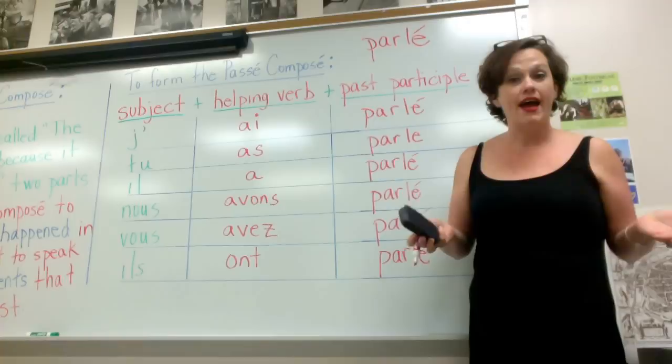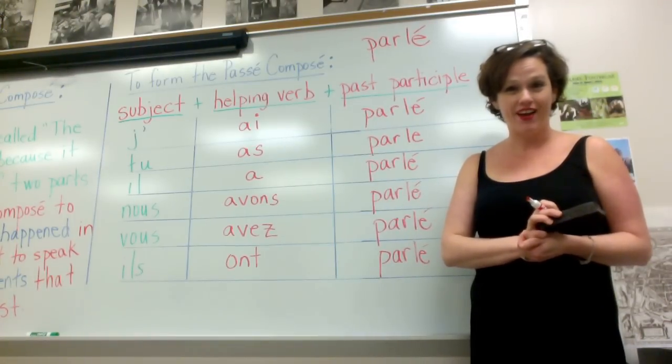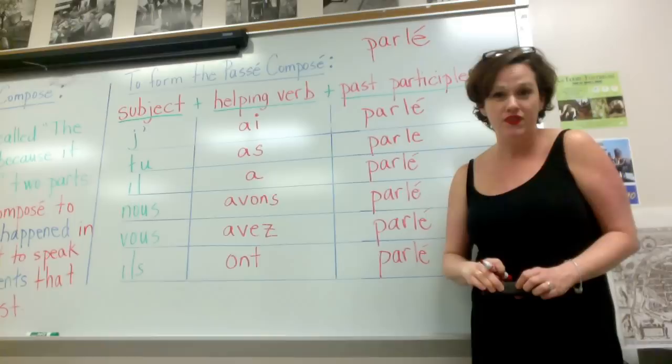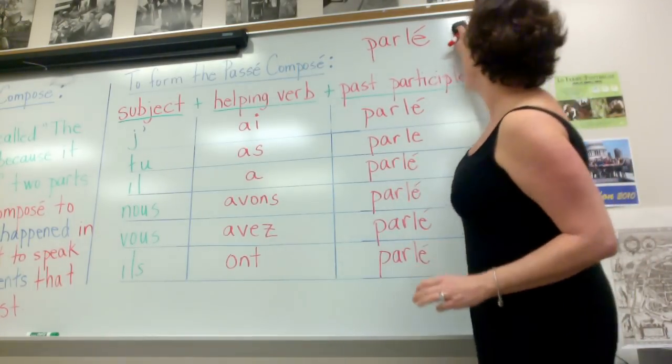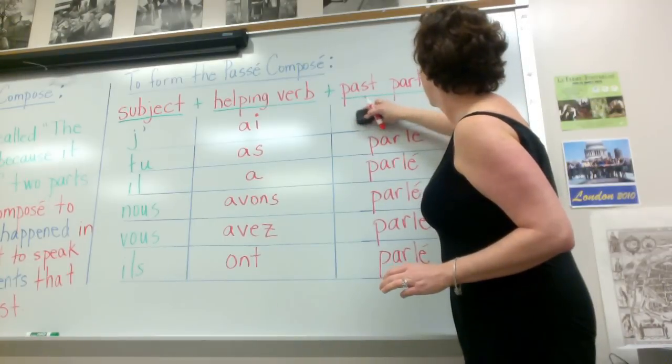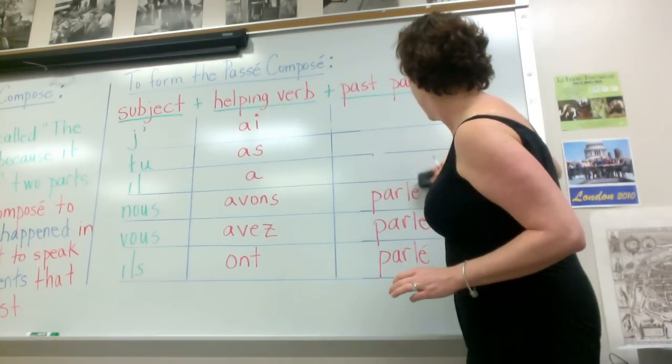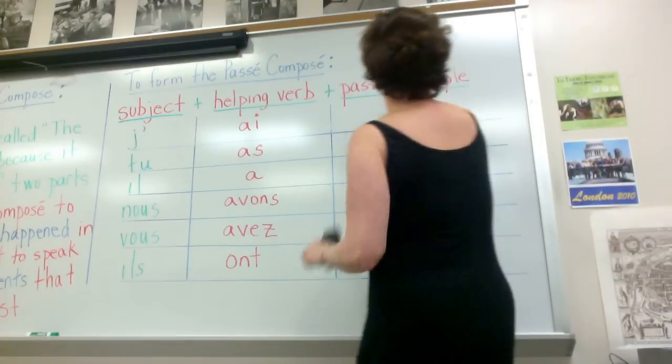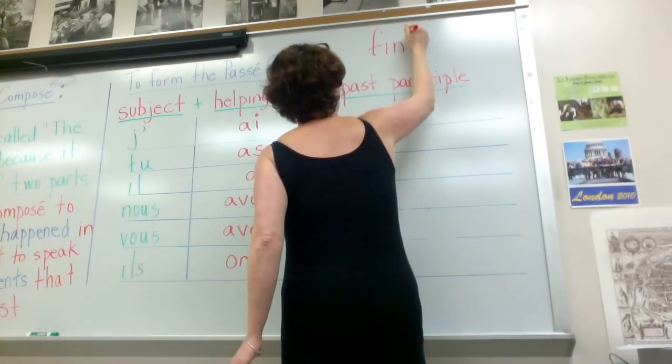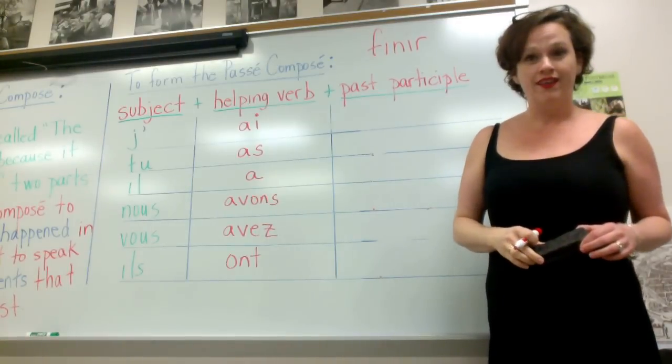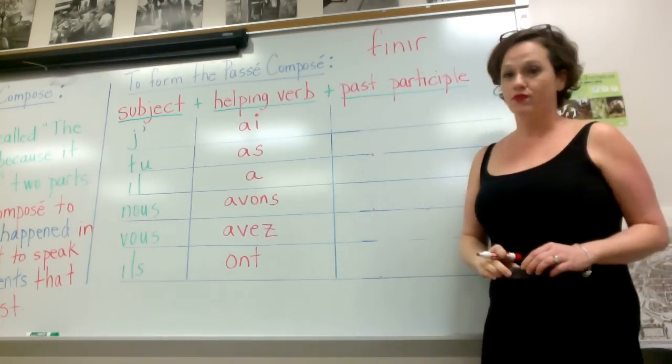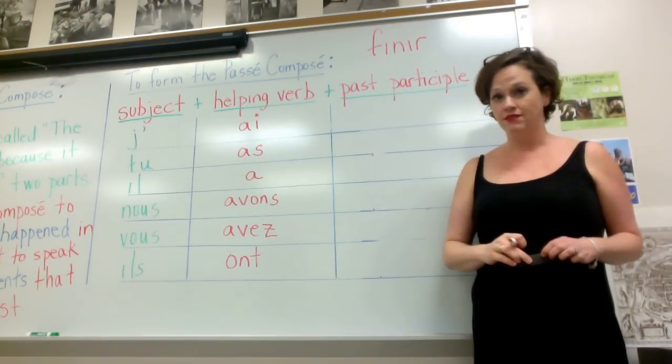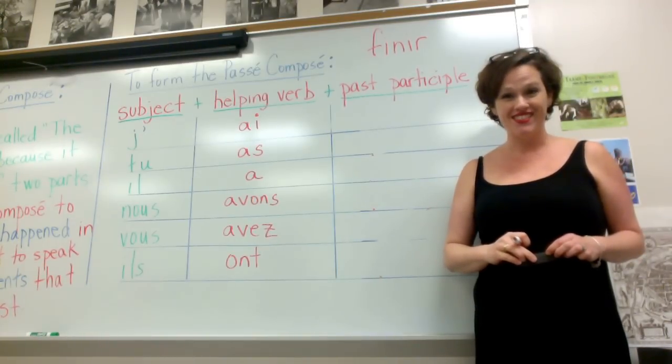The second group, those are the IR verbs. Try to think of a regular IR verb. Have you learned any? The one that comes to mind, one of the first ones that I teach my students, is the verb finir. Have you learned finir? Okay, so let's talk about finir. I'll just erase all of these. Okay, so the verb finir. Remember, when we write it in its original form, that's called the infinitive. So here's the infinitive of the verb finir. Other verbs that work like finir, we have choisir, remplir, obéir. Can you think of any others? Réussir.